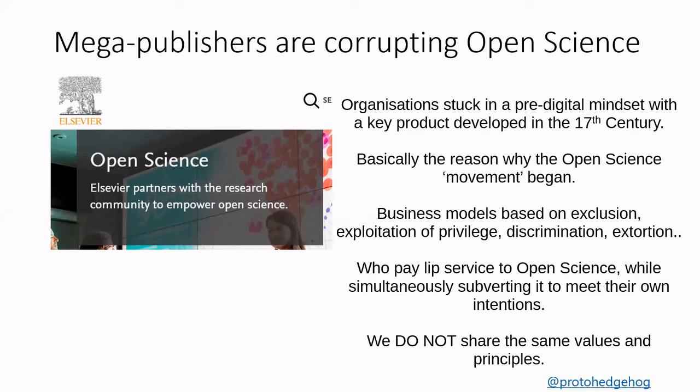One of the things we need to ask more is whether the big commercial publishers are actually helping or hindering us in this space, because they are exercising an extreme amount of power over the entire research lifecycle. These organisations are very much stuck in a pre-digital mindset, and their primary product — journals and papers — was developed in the 17th century. In fact, it was the business practices of companies like Springer, Elsevier, and Wiley that catalyzed the open science community against them.